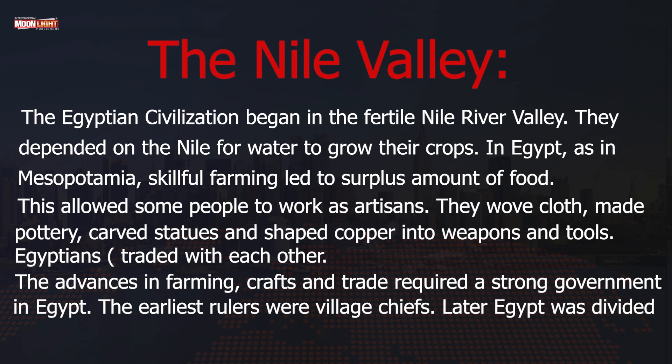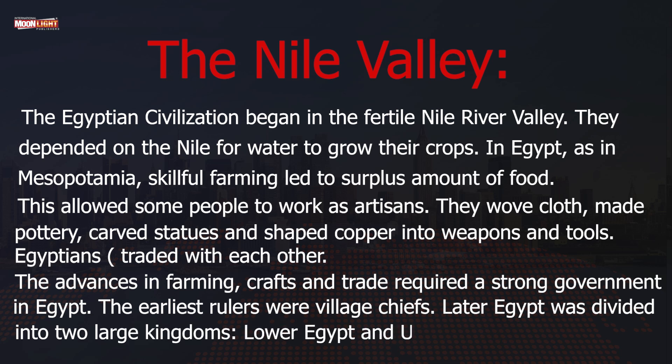The earliest rulers were village chiefs. Later, Egypt was made up of two large kingdoms: Lower Egypt and Upper Egypt.